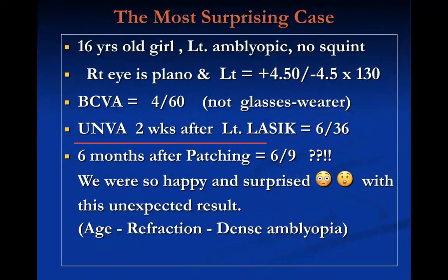The last and most surprising case: a 16-year-old girl with left eye amblyopia and no squint. The right eye was plano; the left eye was +4.50/-4.50 (mixed astigmatism). Best corrected visual acuity was 4/60 and she was not a glasses wearer. Two weeks after LASIK, unaided visual acuity was 6/36. After six months of patching, aided visual acuity reached 6/9. This is surprising given her age — beyond the usual expected correction window — the large mixed astigmatism, and the density of amblyopia.